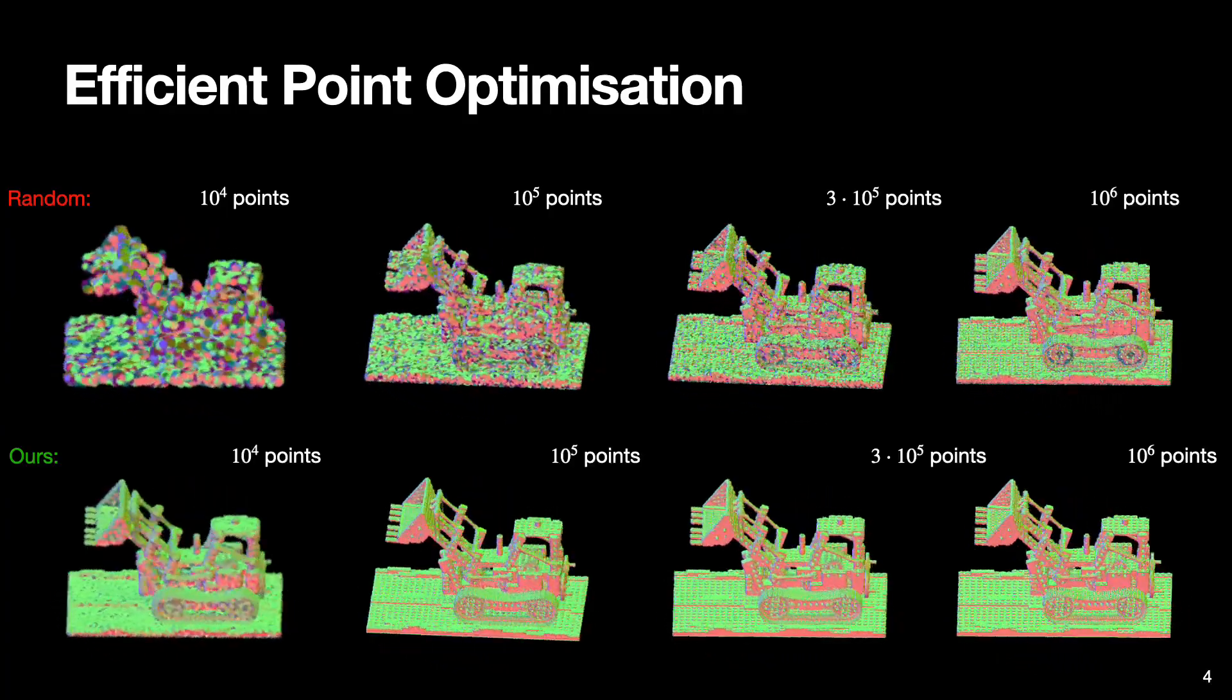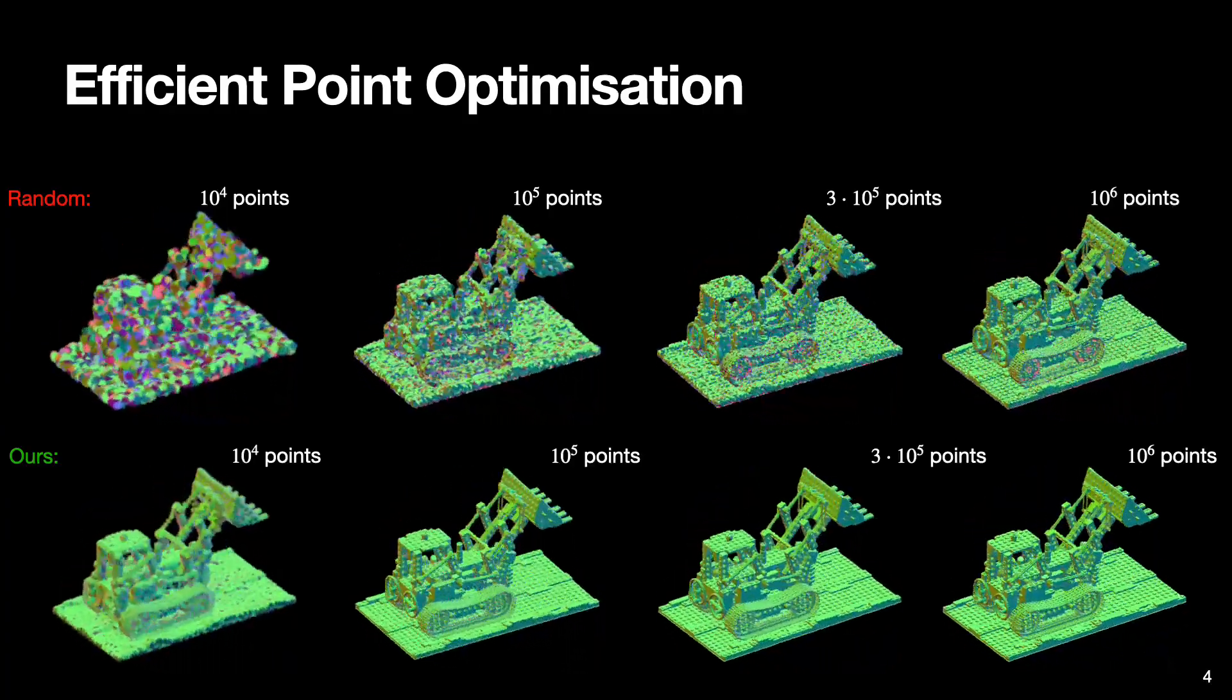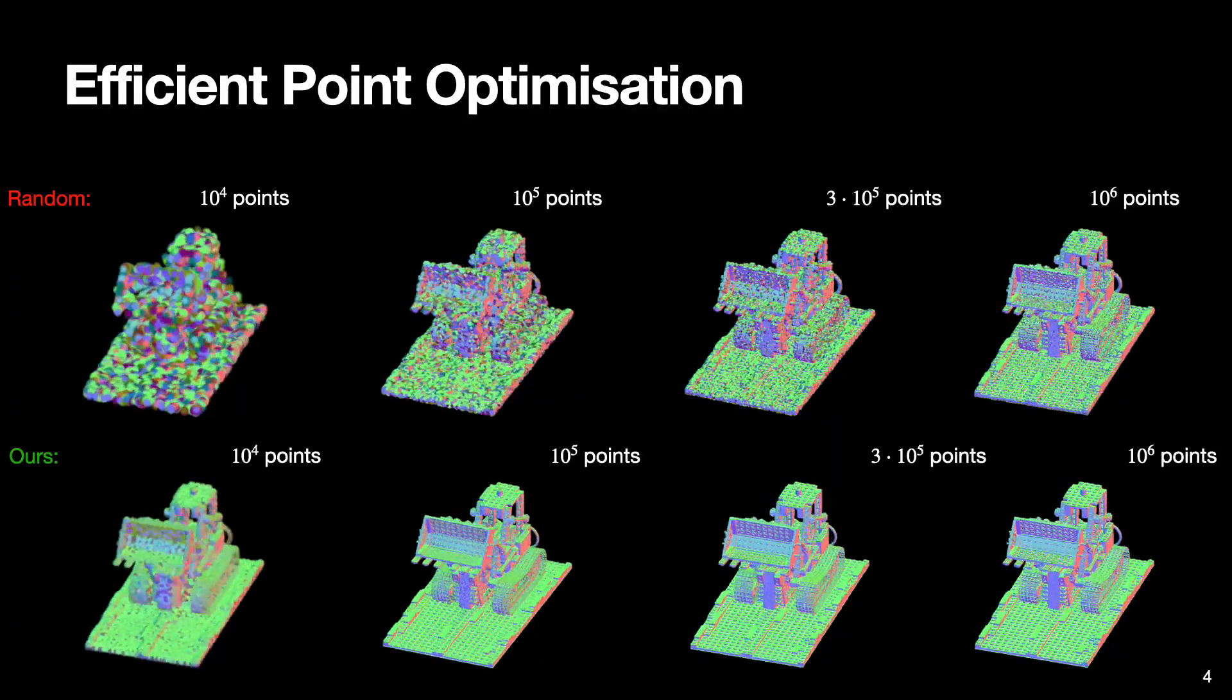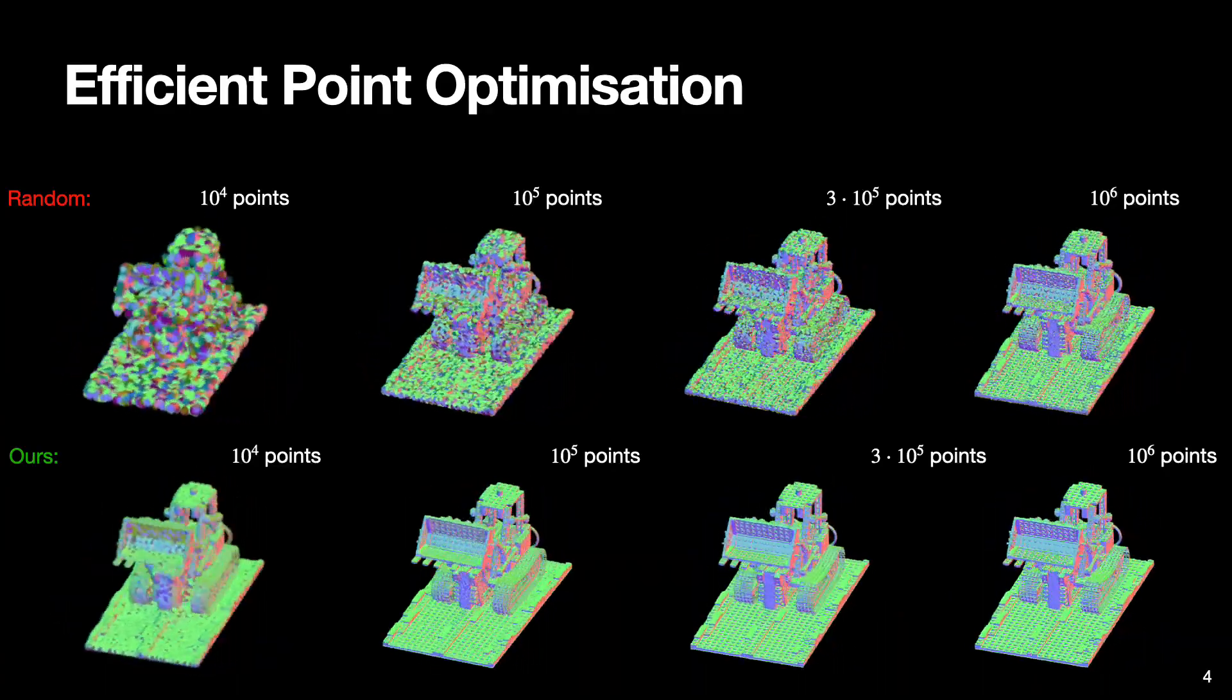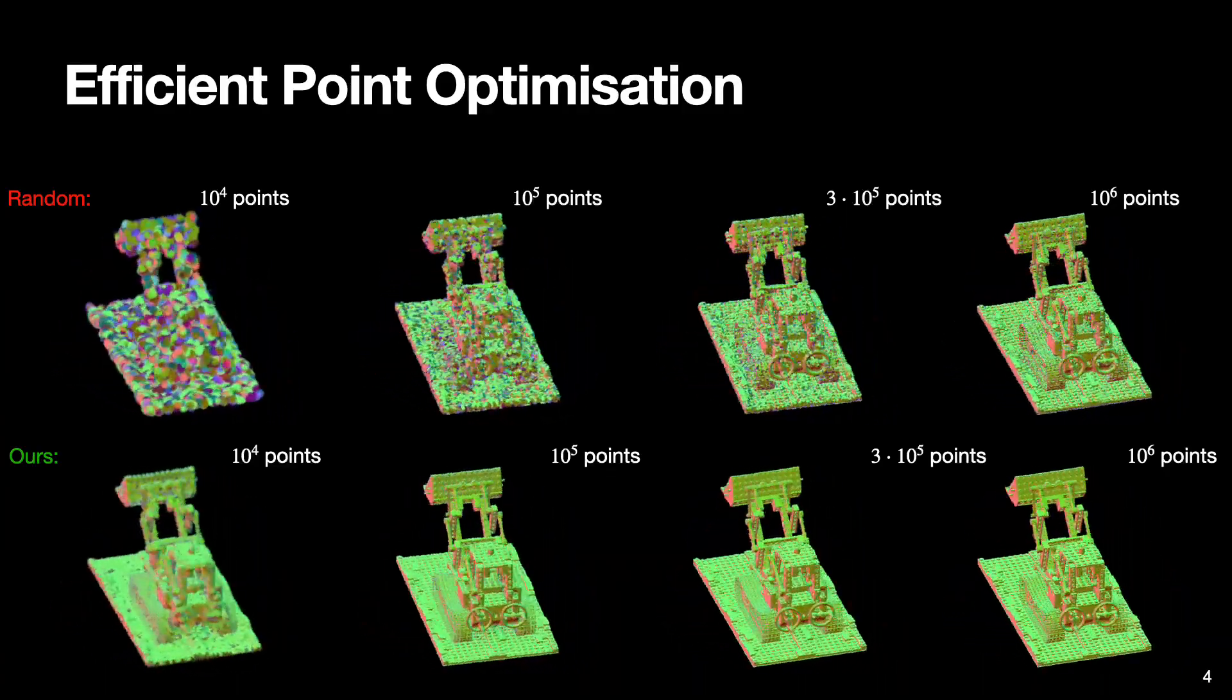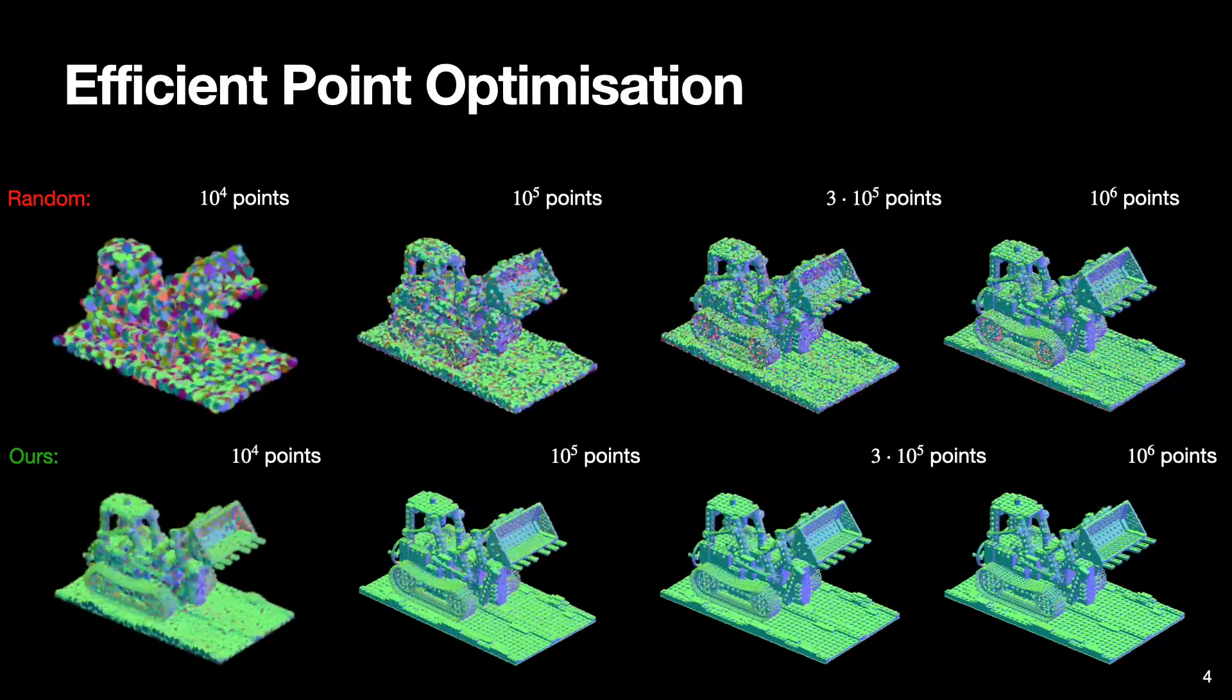We show that while simply storing randomly sampled points from a surface gives suboptimal results, the proposed point optimization scheme leads to an optimal redistribution of points and improvements both in terms of surface reconstruction quality and visual appearance of point normals.